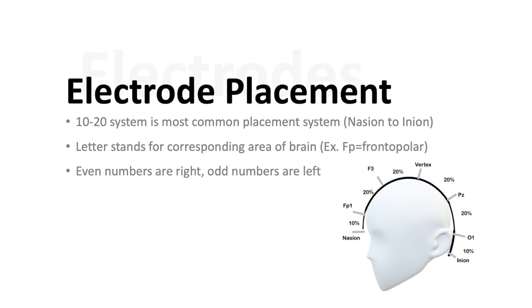Electrodes have to be placed in a standardized way in order for us to give meaning to our recordings. The 10-20 system is the most common placement system, which is from the nasion to the inion. The letter of each electrode stands for approximately where it is on the brain. So FP is frontopolar, F is frontal, V is vertex, P is parietal, and O is occipital. The even numbers are on the right and the odd numbers are on the left, whereas the central letters have Z affixed to them as a subscript.